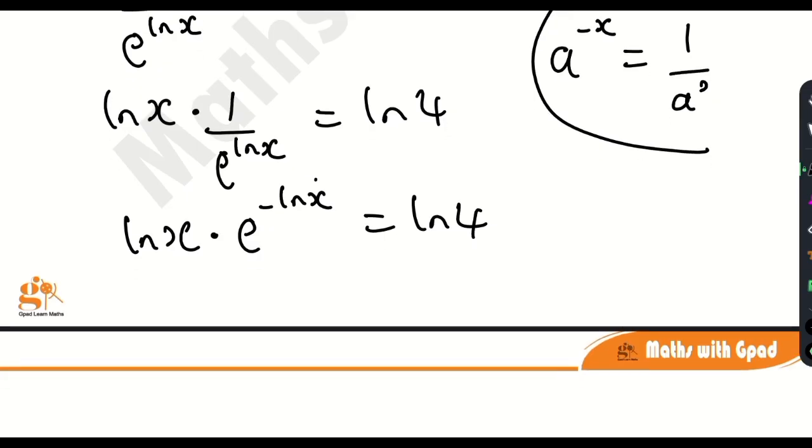So but what do we have? It is minus ln x. But this is ln x. What do we do so that we can have minus ln x here?